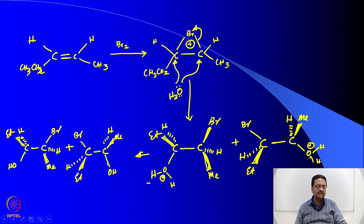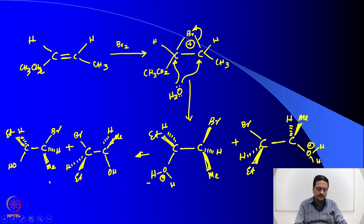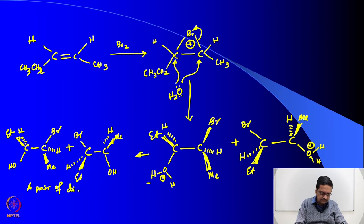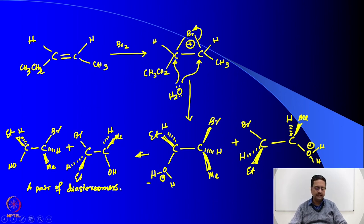These two compounds are a pair of diastereomers. Therefore, this type of reaction can yield two different isomers of the same compound and they have a diastereomeric relationship.